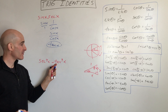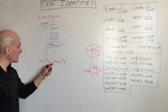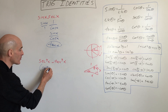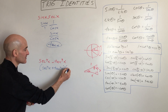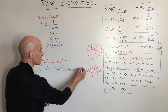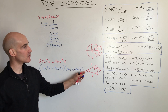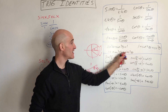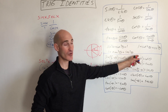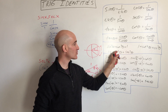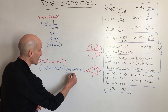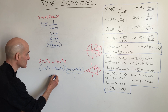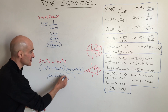Next, we have secant to the fourth of x minus tangent to the fourth of x. We factor this using the difference of two squares: secant squared of x plus tangent squared of x, times secant squared of x minus tangent squared of x. From the Pythagorean trig identities, secant squared minus tangent squared equals 1. So the expression reduces to secant squared x plus tangent squared x times 1, which is just secant squared x plus tangent squared x.